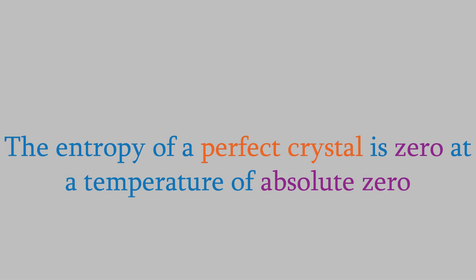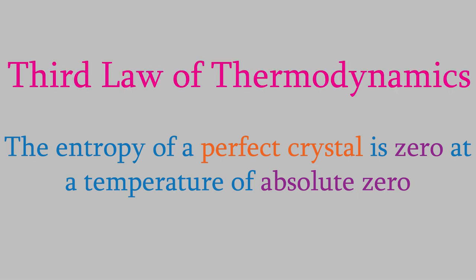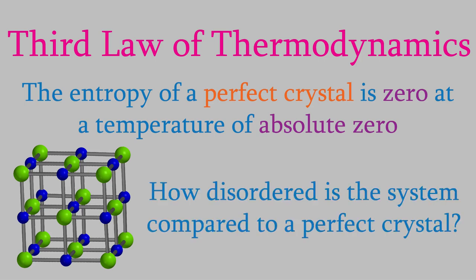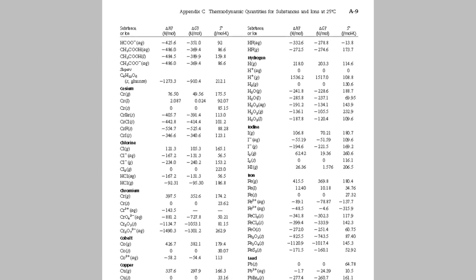In fact, that's what's known as the third law of thermodynamics. The third law says the entropy of a perfect crystal is zero at a temperature of absolute zero. It turns out that this gives us a way to determine the exact entropy of any substance. To find the entropy of a compound, for example liquid water, we just need to determine how disordered it is compared to a perfect crystal. Unfortunately, that is not easy to do, but luckily for us, this has already been done over the years, and as a result, there's a long list of entropies in the third column of Appendix C in your textbook.